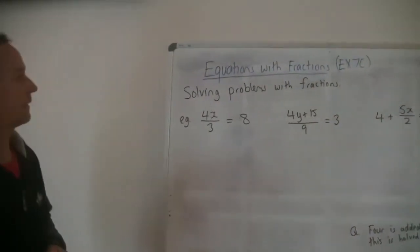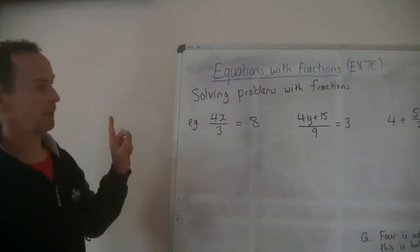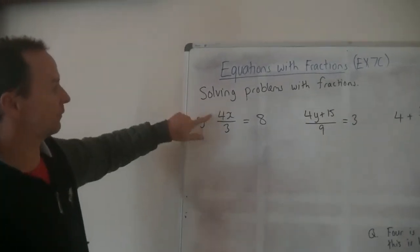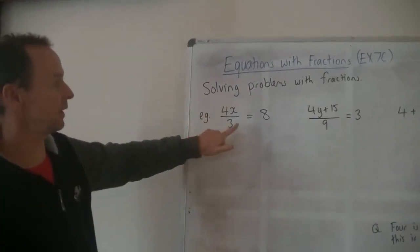So have a look here everyone. Like I said, just a whole bunch of questions. The only way to get rid of these is to practice. So we've got the first one, 4x divided by 3 is equal to 8.